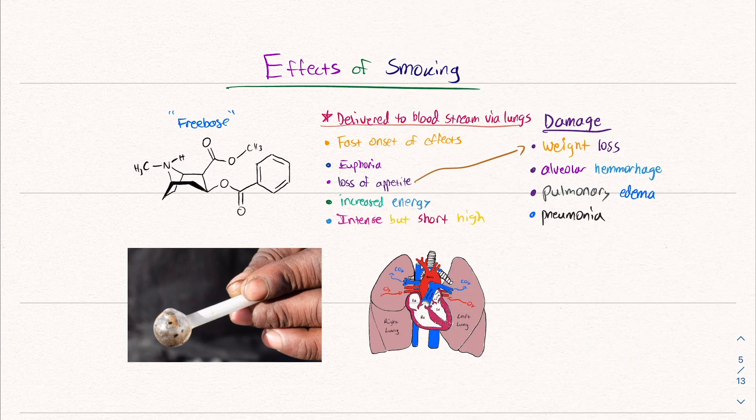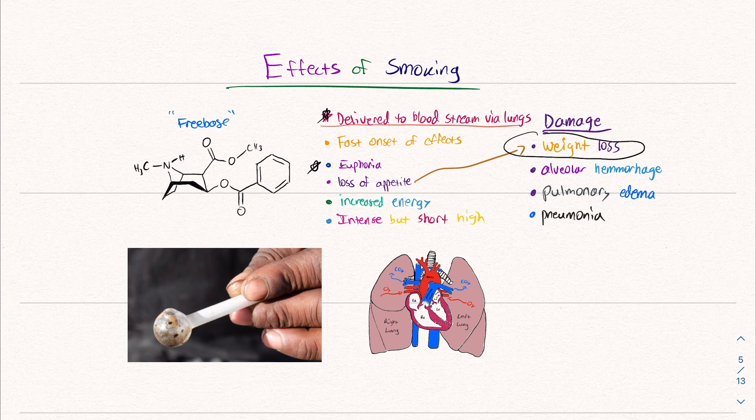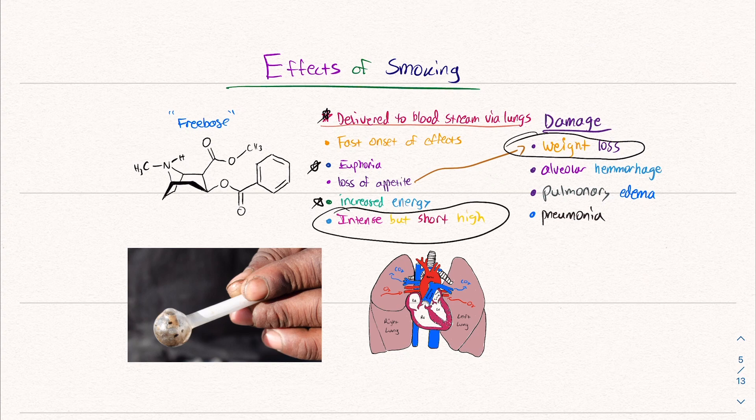So what are the effects of smoking this converted cocaine hydrochloride? It's delivered to the bloodstream via the lungs. It is a much quicker onset of effects. Within seconds, you feel the effects as opposed to the powder version where it takes a little time to peak. So there's euphoria, you can often have a loss of appetite which can contribute to significant weight loss, increased energy, and intense but short high.